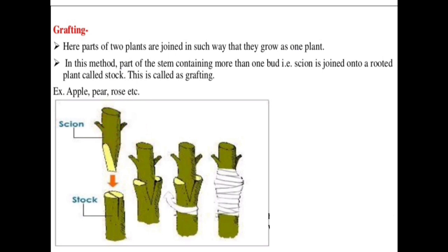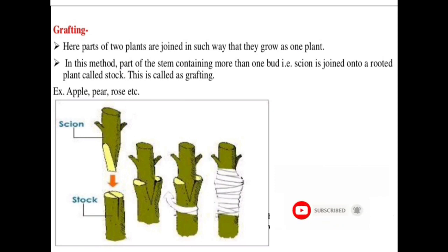In grafting, a triangular cut is made and the parts are joined together. The joint is then wrapped, either using plastic or plant material, to hold the two parts securely together so they grow as one plant.